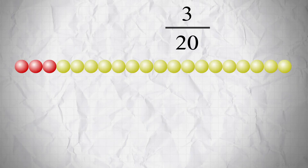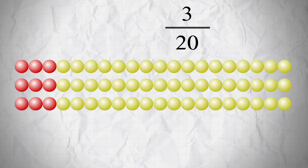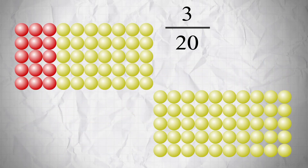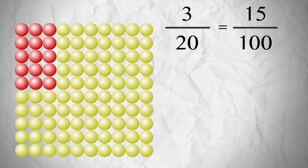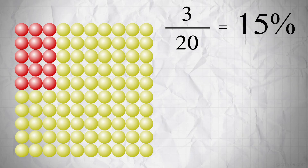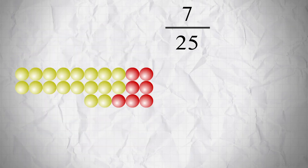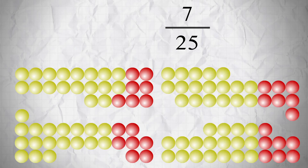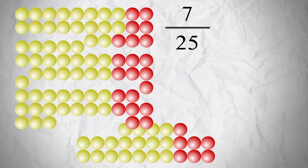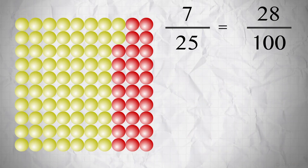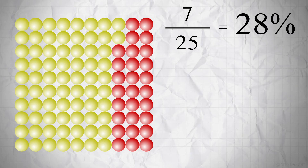Let's look at other examples of finding a percent. Here's 3 out of 20, and if we repeat this five times, we get 28 out of 100, or 28%. And here's 7 out of 25 — if we repeat this four times, we get 28 out of 100, or 28%. So 7 out of 25 is equal to 28%.